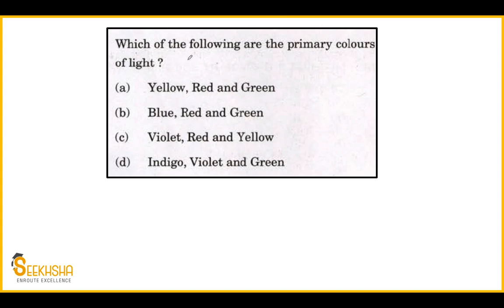Which of the following are the primary colors of light? This is a question from school studies. Option A says yellow, red and green. Option B says blue, red and green. Option C says violet, red and yellow. Option D says indigo, violet and green.